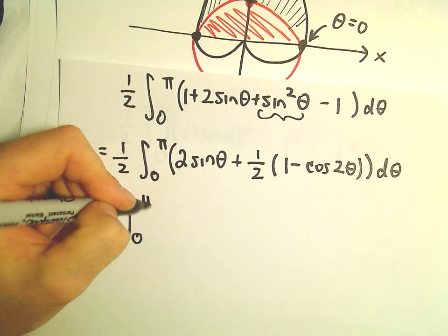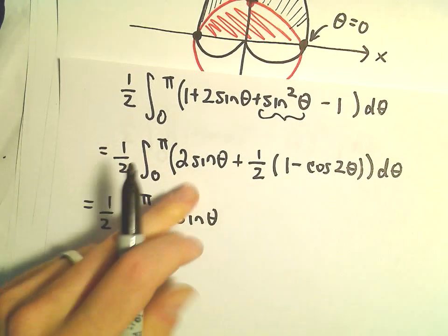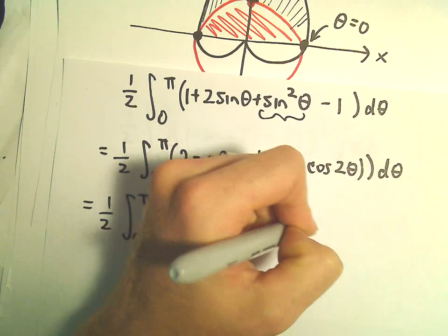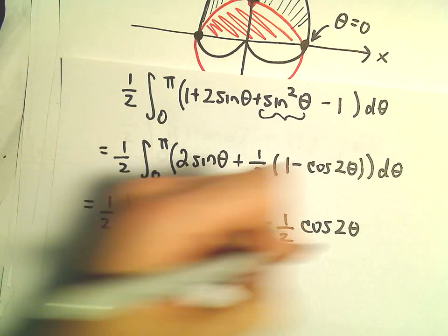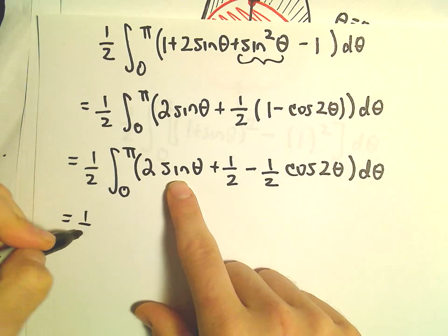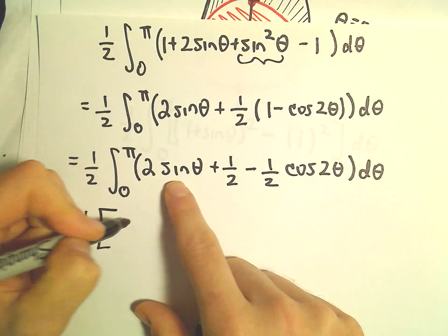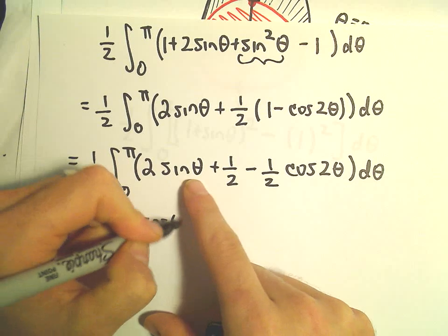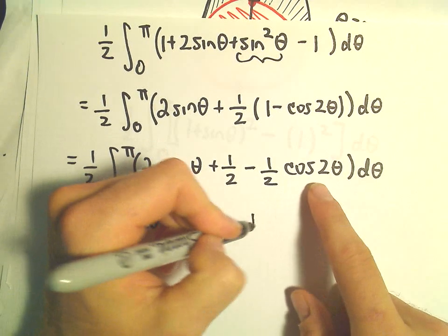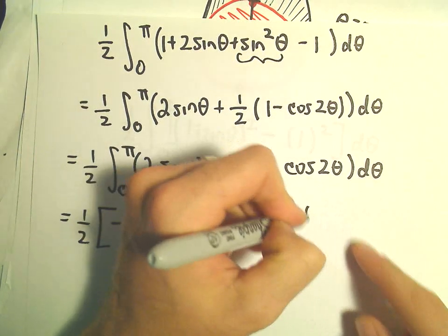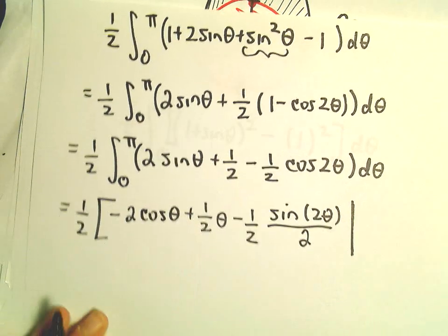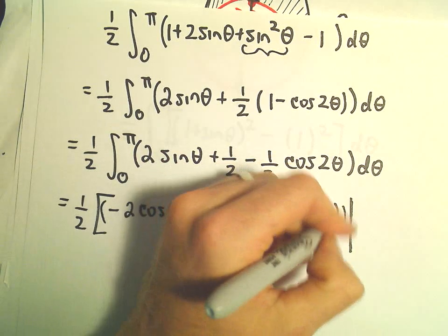And now, just going to rewrite this a little bit more. We've got 2 sine theta. This would be plus 1 half minus 1 half times cosine of 2 theta d theta. And now I'm going to compute our antiderivative. So we've got 1 half. We would have negative 2 times cosine theta. We would have a 1 half theta. And then the antiderivative of cosine 2 theta, we'll get sine of 2 theta all over 2. And all of this is going to have to be evaluated from 0 to pi.